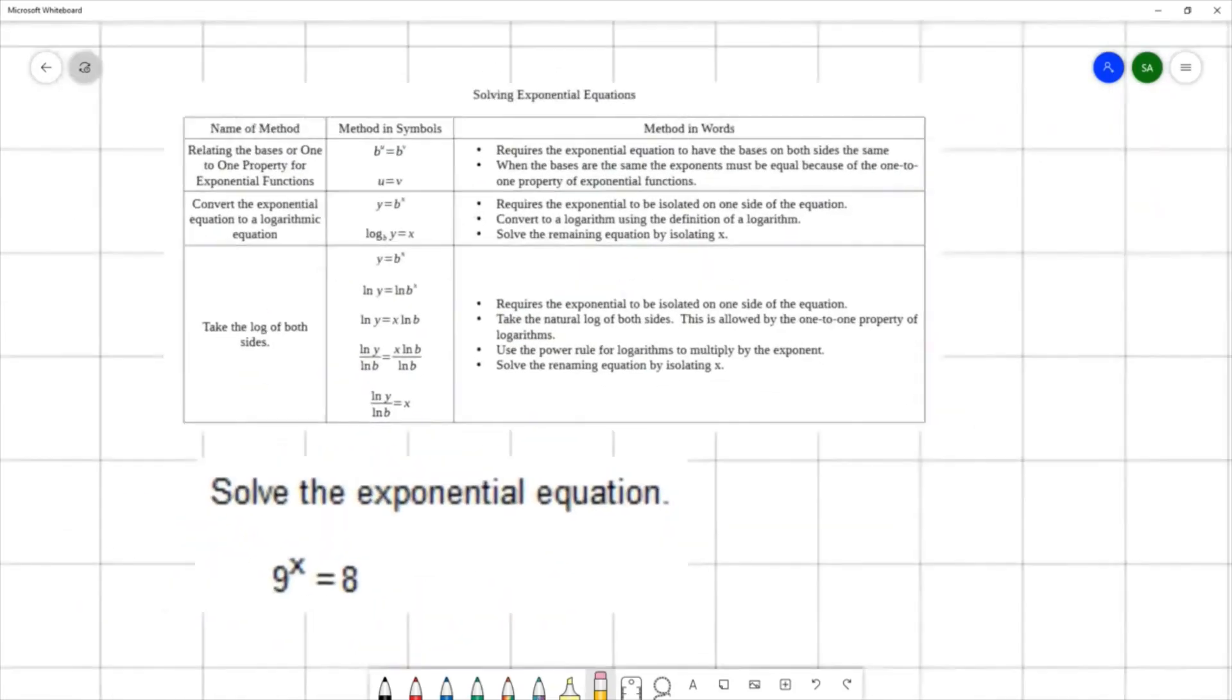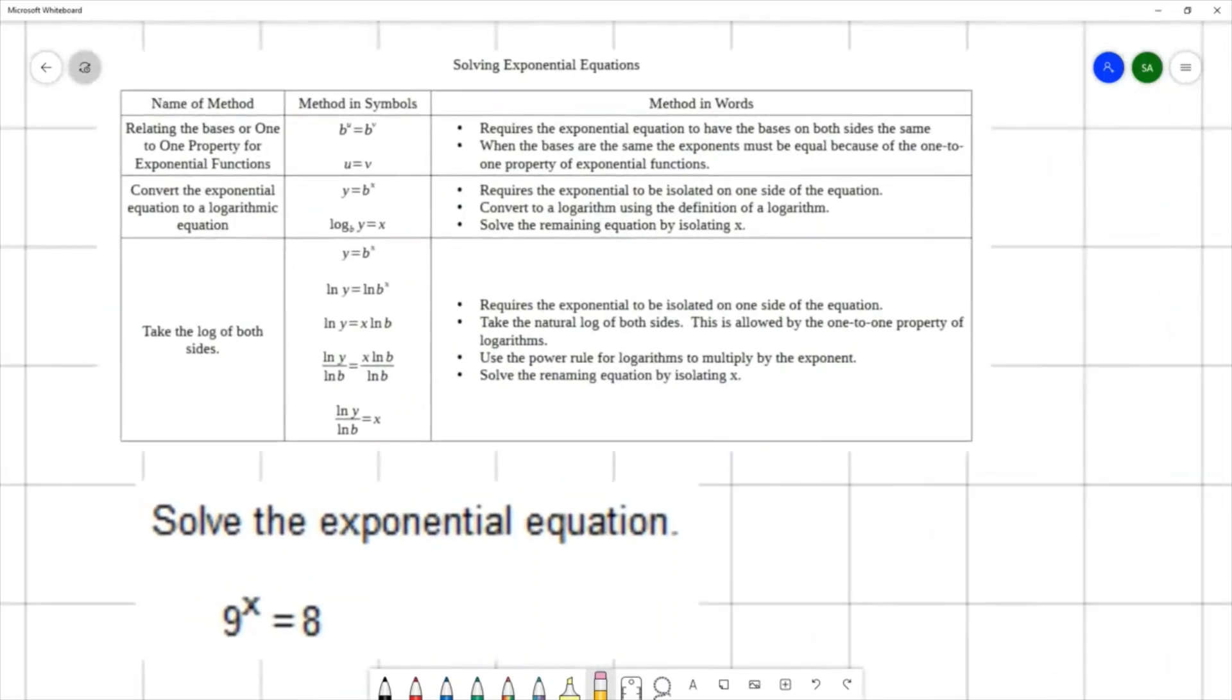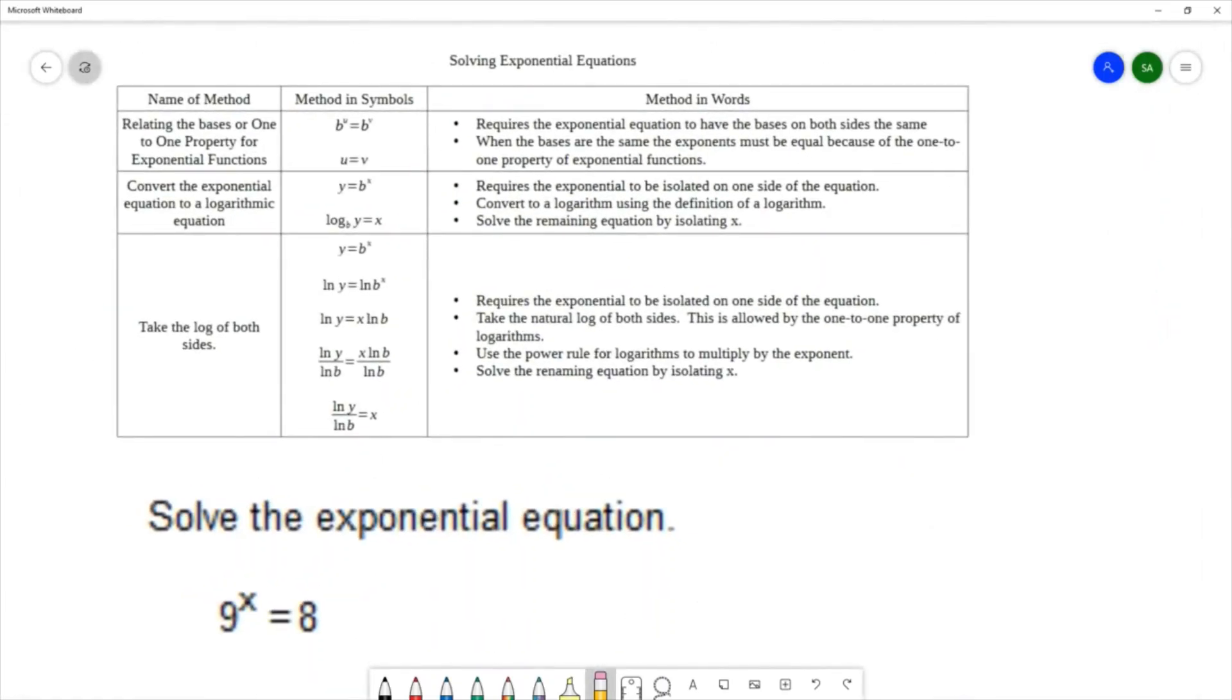I've got three of the main methods that we typically use for solving exponential equations. The first method is called relating the bases, and sometimes it's called the one-to-one property for exponential functions. In this method, you would try to rewrite your equation so that each side has the same base, and once they have the same base, you can say that the exponent on the left is equal to the exponent on the right, giving you a much simpler equation to work out.